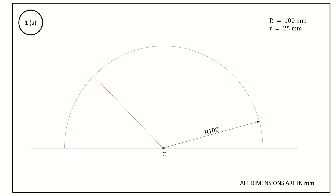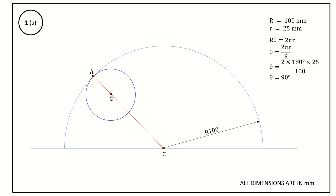Join point C with any one point on the arc and mark that point as A. From point A, measure 25 mm along the line and locate point O — so AO equals 25 mm. Take a compass, center point O, radius OA (25 mm), and draw a complete circle. We know θ = 2πr / R = 2 × 180° × 25 / 100 = 90 degrees. Instead of measuring the arc length 2πr, we go for angular measurement: θ equals 90 degrees.